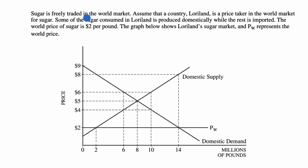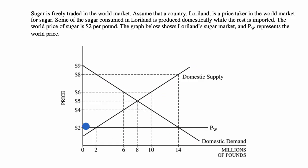We're told sugar is freely traded in the world market. Assume that a country, Loreland, is a price taker in the world market for sugar. Some of the sugar consumed in Loreland is produced domestically, while the rest is imported. The world price of sugar is $2 per pound. The graph below shows Loreland's sugar market, where P sub W represents the world price. We can see the domestic demand, the domestic supply, and the world price.